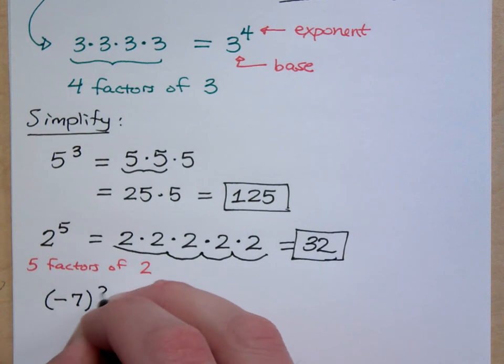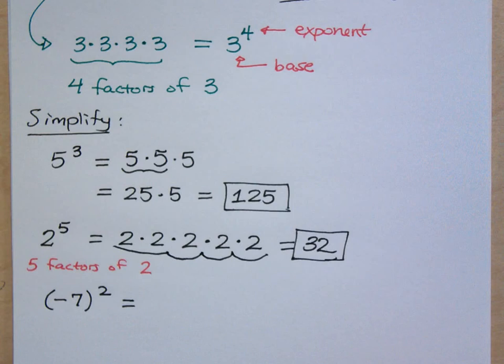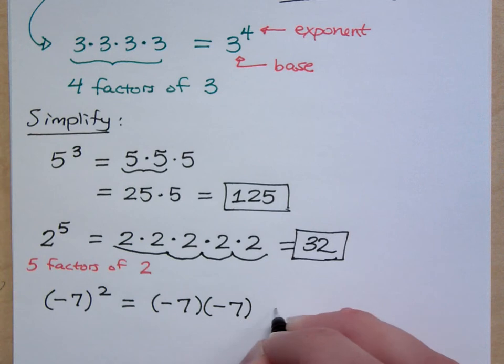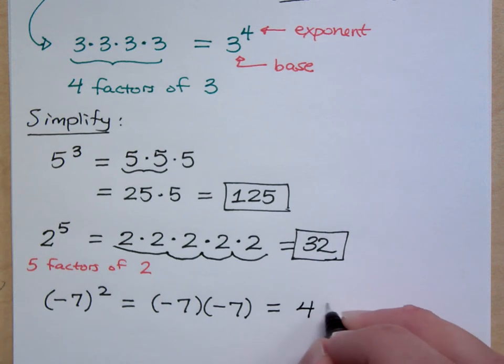How about negative 7 squared? What does this mean? It means negative 7 times negative 7. I have how many factors of negative 7? Two. What's negative 7 times negative 7? Positive or negative? A positive 49.